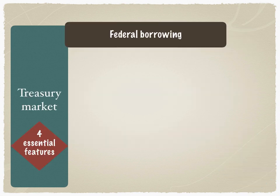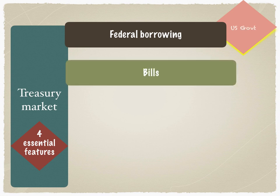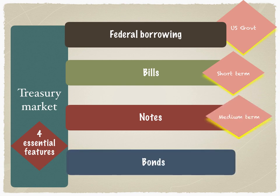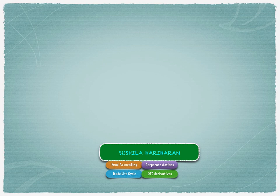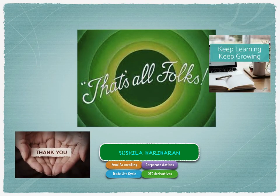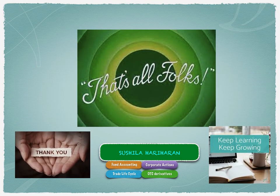The treasury market therefore has these four essential features: federal borrowings of the United States government, classified into bills which are short-term in nature, notes which are medium-term in nature, and bonds which are long-term in nature. Keep learning and keep growing. Thank you so much for listening in.